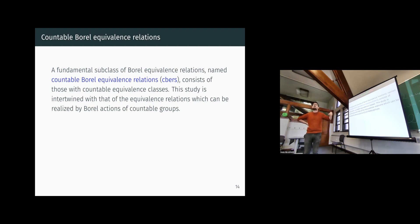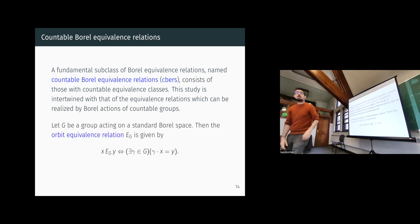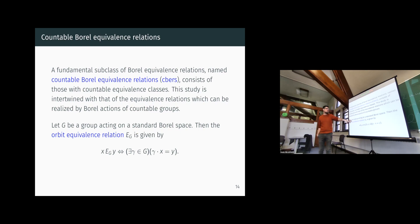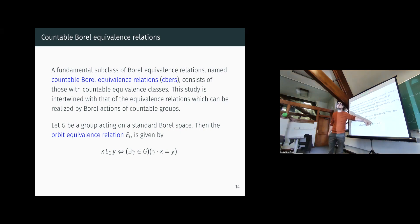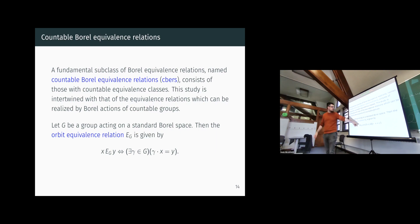The study of CBERs has been incredibly developed in the Borel setting because they are very closely connected with equivalence relations realized by Borel actions of countable groups. If you have a group action on a standard Borel space, this gives rise to an orbit equivalence relation: two elements are in the same class if and only if there is a group element sending one to the other. This is an equivalence relation because you have inverses and composition.